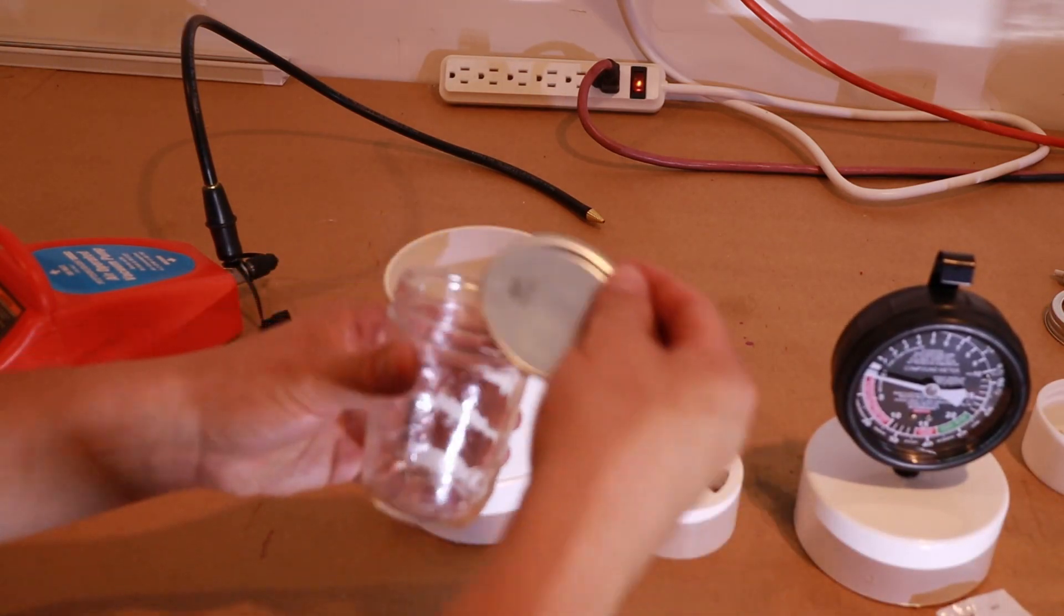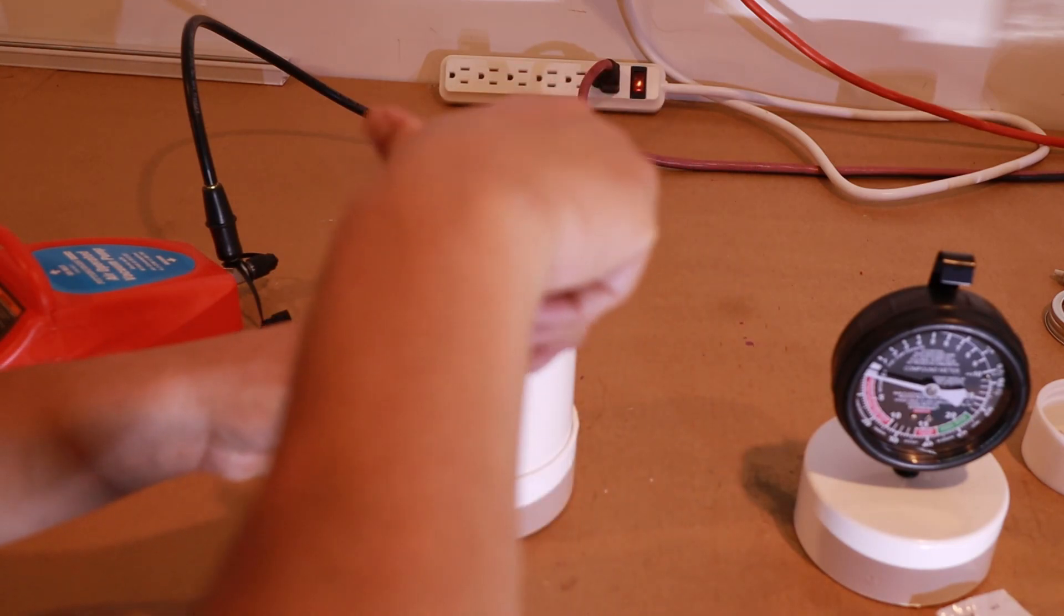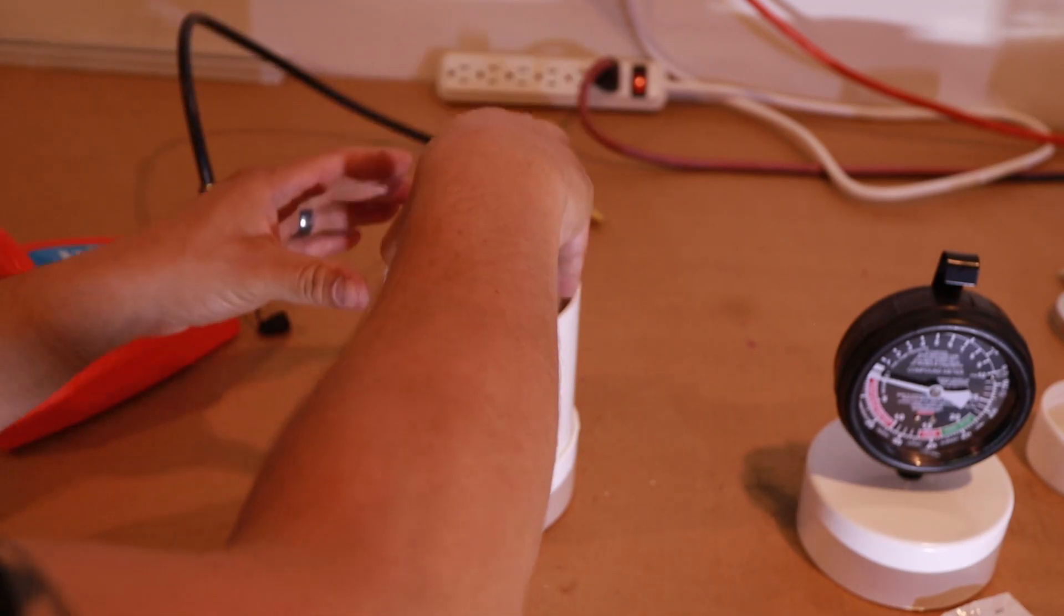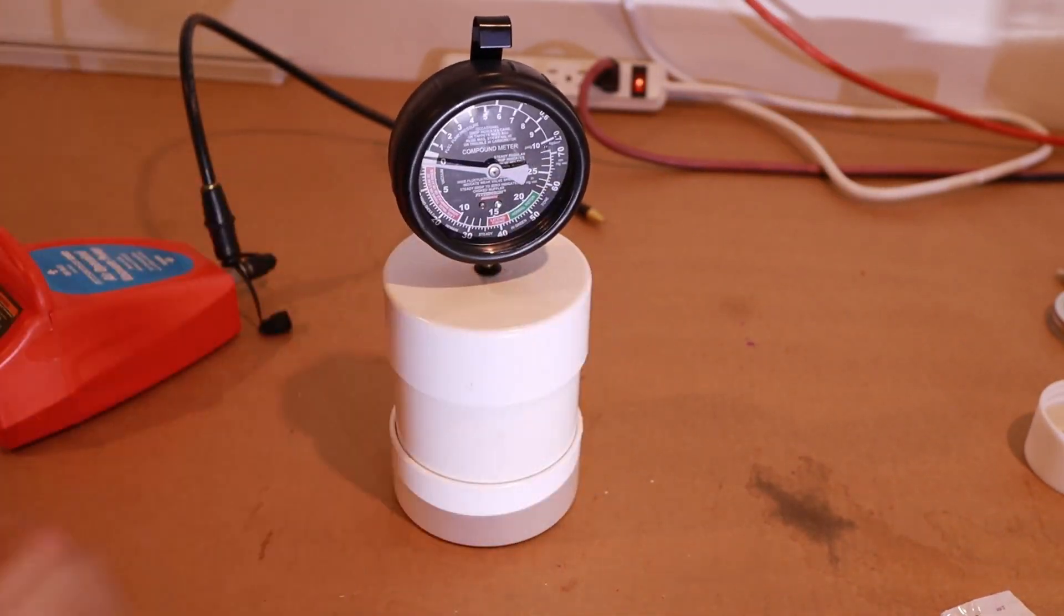Take your jar, throw the standard lid on, throw the adapter on, screw it down, doesn't need to be that tight. Place it inside the tube, close it up.